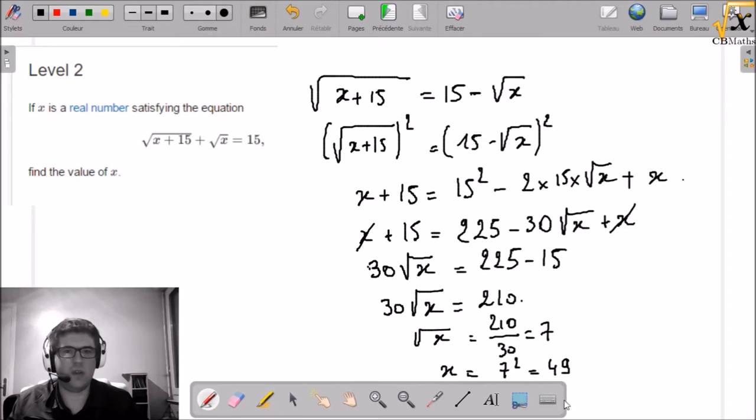So the square root of x equals 7, x equals 7 square equals 49. So the solution of this equation is 49. Square root of 49 plus 15 plus square root of 49, square root of 64 plus square root of 49 equals 8 plus 7 equals 15.